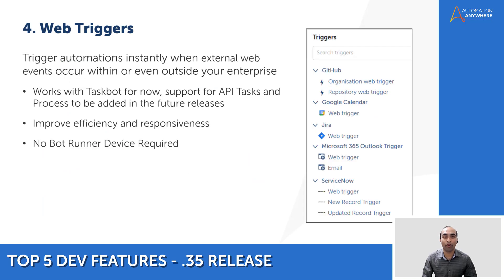Moving on to number 4, we have introduced web triggers. With this feature, you can trigger automations instantly whenever external web events occur within or even outside your enterprise. Whether it's a notification, an update, or a crucial alert, web triggers ensure your systems respond in real-time, keeping your operations seamless and agile. Currently, web triggers integrate with taskbots, and that's just the beginning — future releases will expand support to include API tasks and process automations.